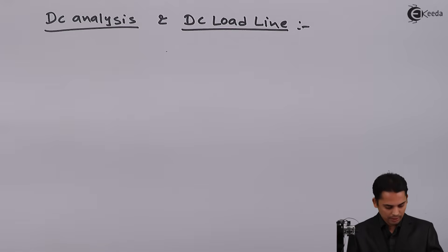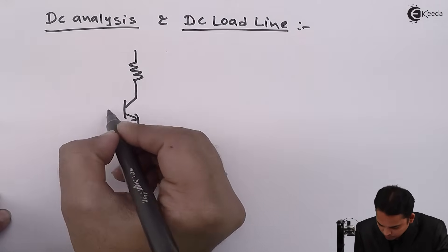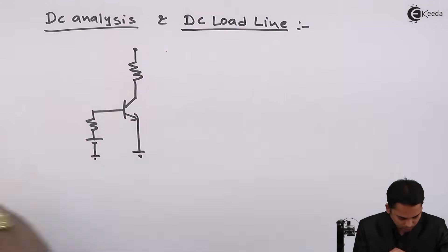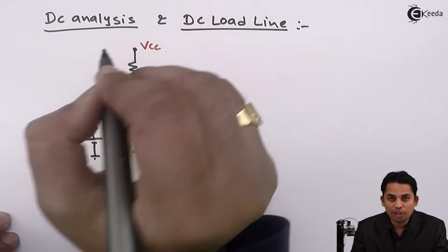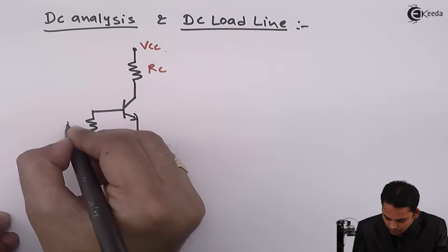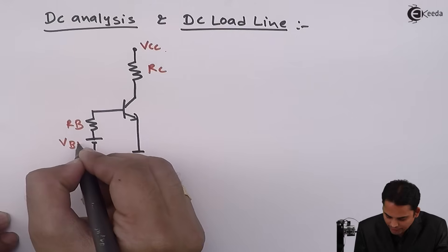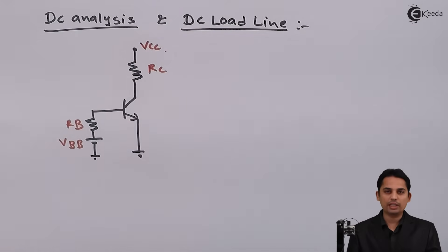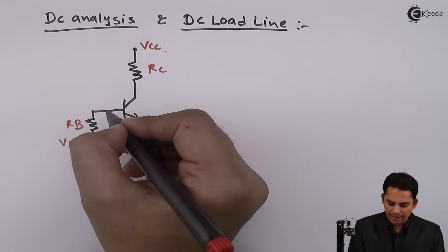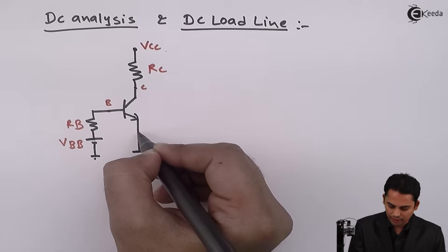Hence, circuit diagram for DC circuit becomes: which has VCC which is DC battery, RC, RB, and again DC battery called VBB. As shown in the circuit diagram, a DC battery is applied at the base and at the collector.